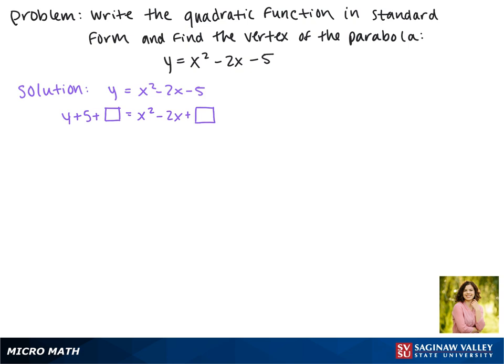We want to make this so that we can have some binomial squared. What we have to do is b over 2 squared. In this case, that's negative 2 over 2 squared, which is negative 1 squared, which is 1. If we add 1 to the right side, we have to do it to the left side as well.